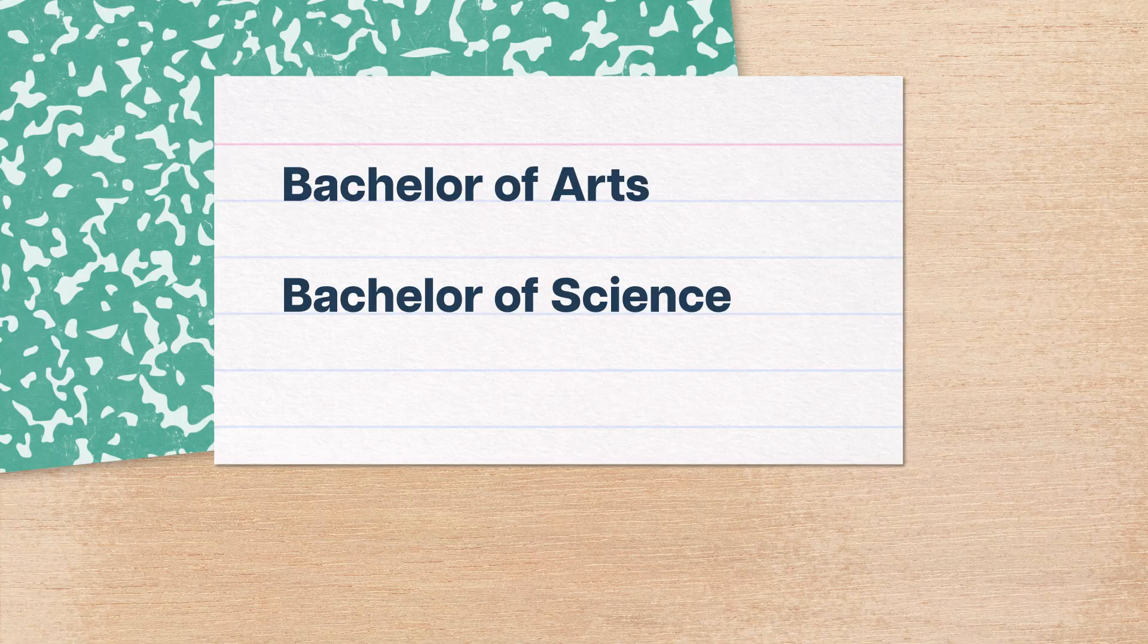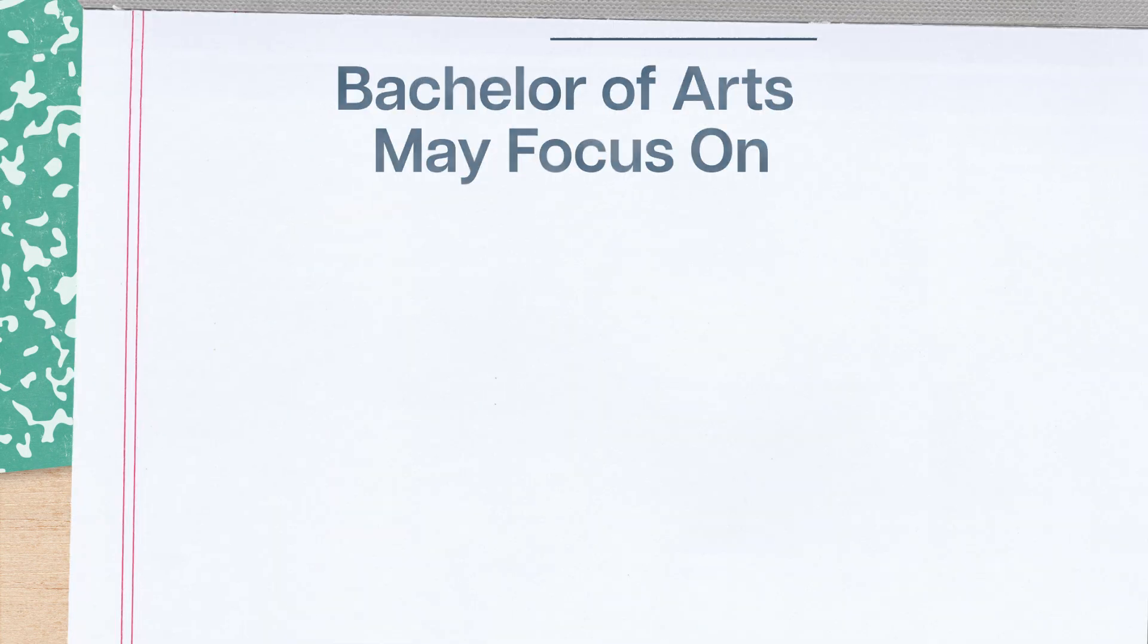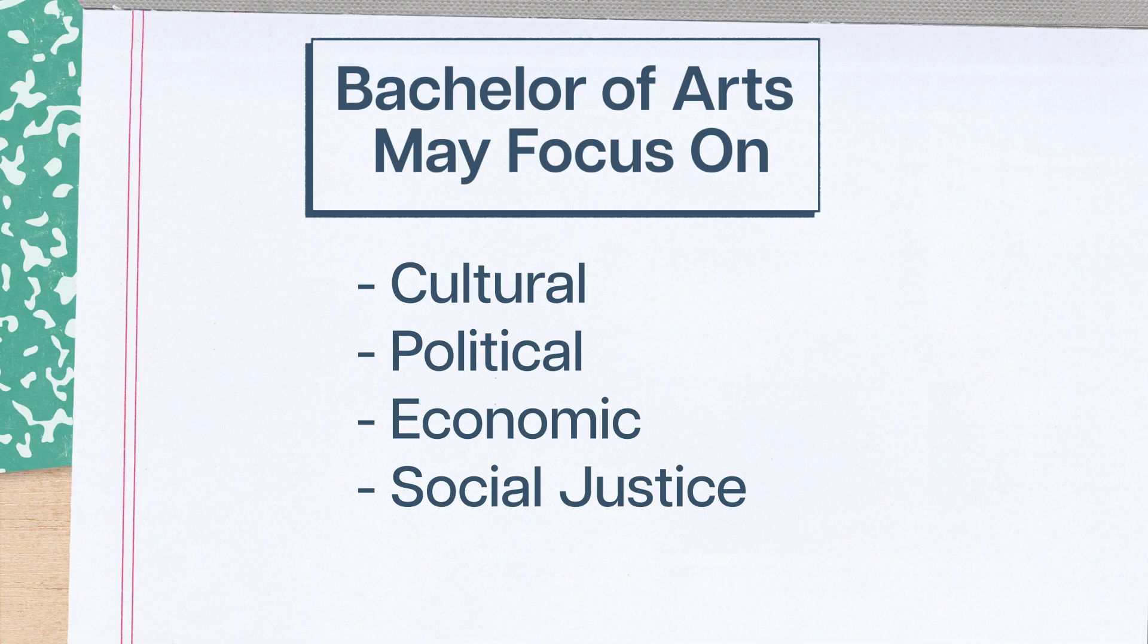At some schools, you'll have a choice between a Public Health Bachelor of Arts or a Bachelor of Science. A Bachelor of Arts will go more into the human side of things, focusing on the cultural, political, economic, and social justice side of public health. Meanwhile, a Bachelor of Science will get deeper into stuff like epidemiology, environmental science, and data science for a more clinical perspective.